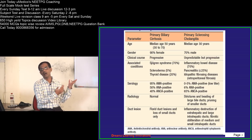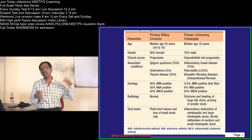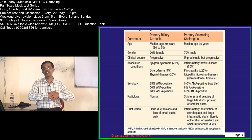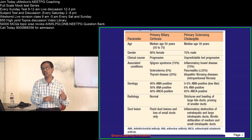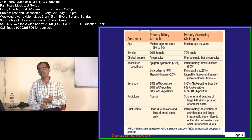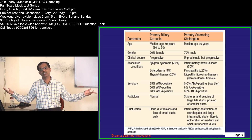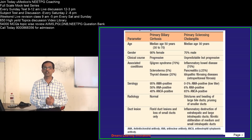ANA is also not specific for PBC because it is present in other immunological diseases like SLE. So the MCQ derived here is: which antibody is highly sensitive and specific for primary biliary cirrhosis? The answer is antimitochondrial antibodies. ANA is neither sensitive nor specific for PBC, and ANCA is seen in only 40% of cases — not sensitive. ANCA is also seen in other conditions like Wegener's granulomatosis, microscopic polyangitis, and Churg-Strauss disease. AMA is highly specific and highly sensitive for PBC.